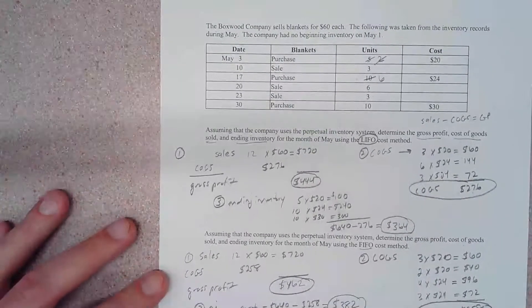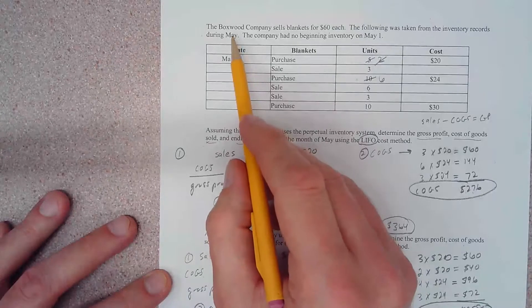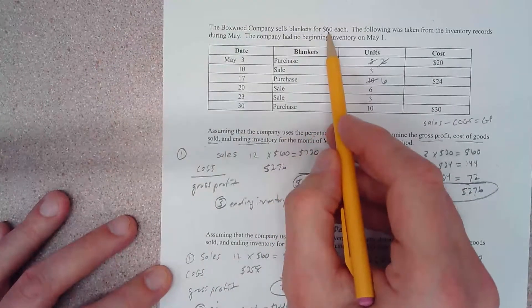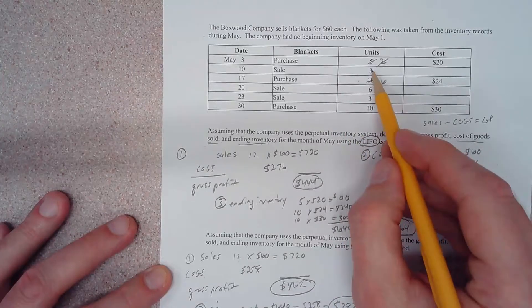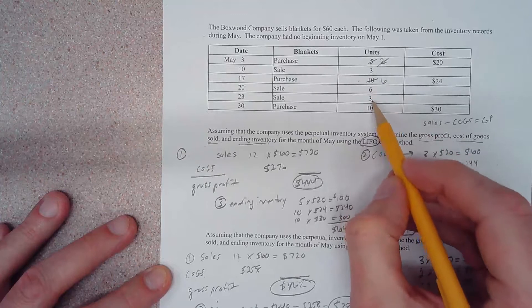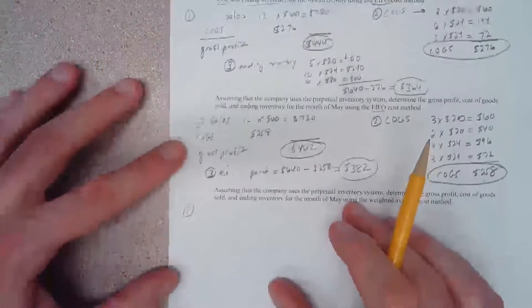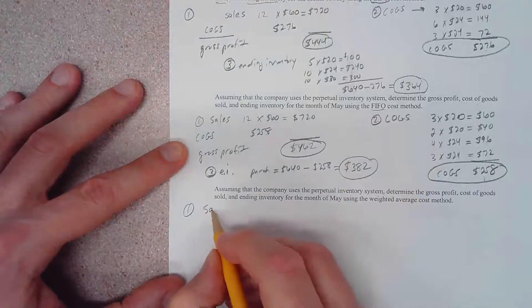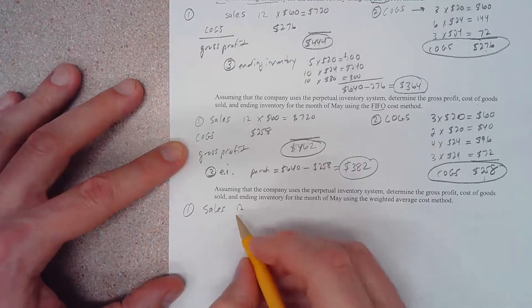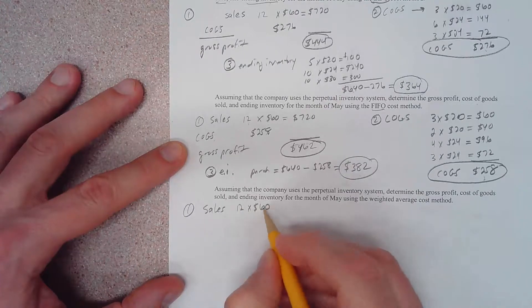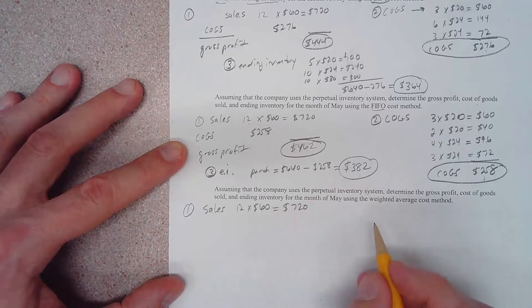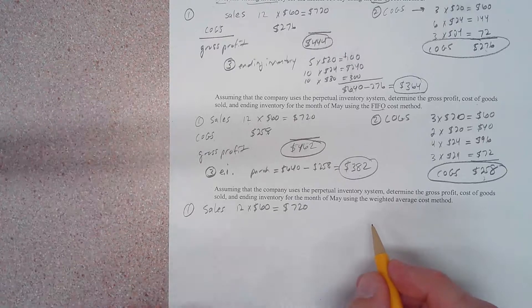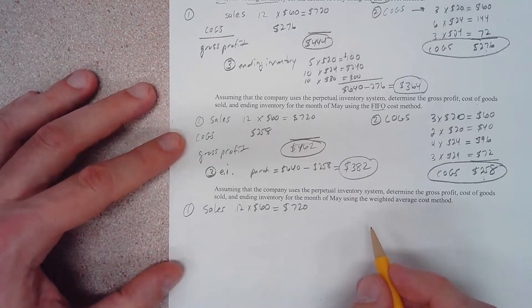We want to know gross profit, so just as we did before, we looked at our scenario and it says we're selling blankets for $60 each. We sold 3 plus 6 plus another 3, which is 12 units. So our sales are going to be 12 units sold times $60 each. This will not change - this has nothing to do with the inventory cost flow method. So sales are $720.